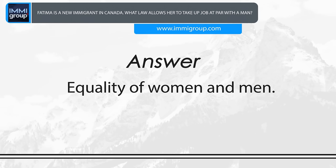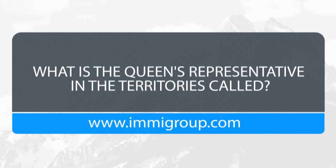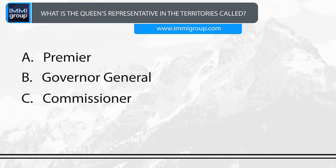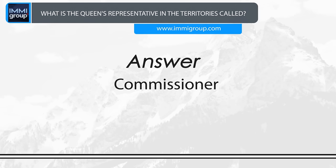What is the Queen's representative in the territories called? A. Premier. B. Governor-General. C. Commissioner. D. Member of Parliament. Answer: Commissioner.